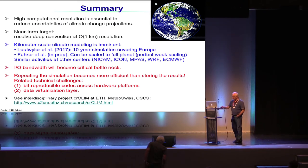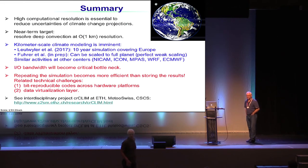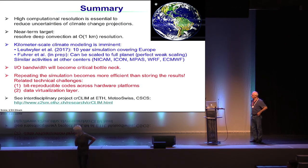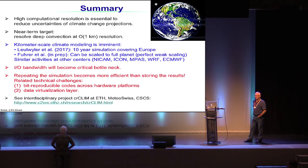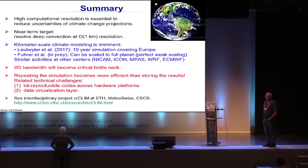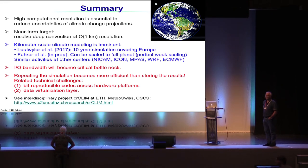Thank you. A lot would depend on the data virtualization layer in how expressive you could be. One can imagine it would be easy to request averages or conditional averages. But if one was trying to do feature extraction - as shown for cold fronts - can you describe what kinds of calculations you imagine making possible this way, and what would not be possible?